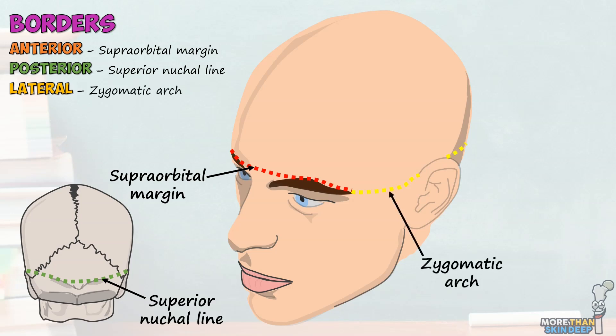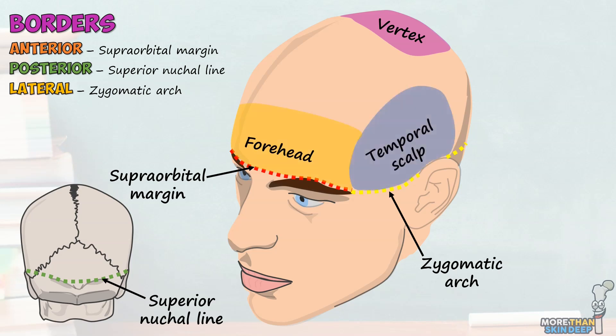The area bounded within this region is vast and has lots of variable anatomical features, but there isn't great agreement on how to divide it up. However, key areas to be aware of are the vertex, which is the circular region on the back of the head where the whorl of hair sits in men; the forehead, which spans between the hairline and the supraorbital ridge; and the temporal region, which sits on the lateral aspect of the head and roughly overlies the distribution of the temporalis muscle.